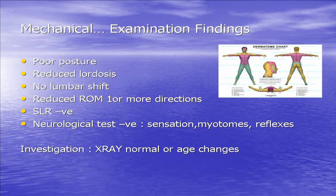Don't forget your dermatomes — your body is a big jigsaw puzzle and it's putting all the pieces together that gives you your working diagnosis and management for the patient. They normally have poor posture, reduced lordosis, no form of shift, and a reduced range of movement, possibly in one or more directions. The neurological tests are negative.